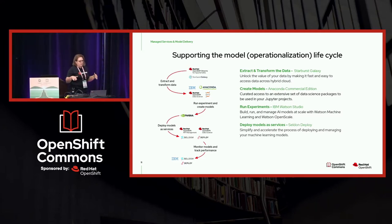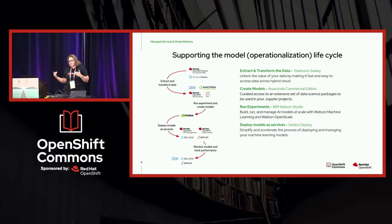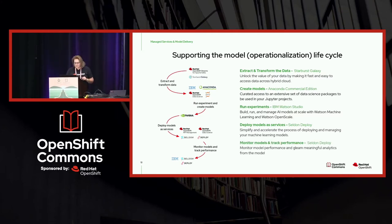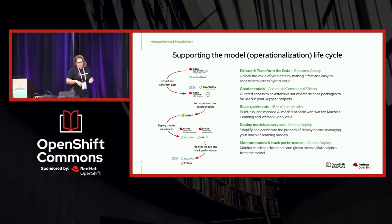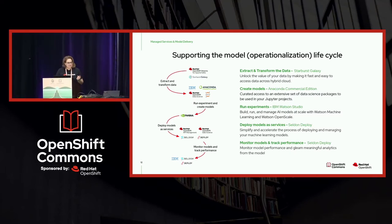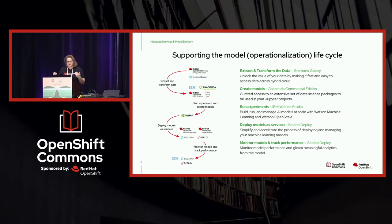Once you're done with your model and your experimentation, you want to deploy those models as actual services. You can use an ISV such as Seldon Deploy, which really helps you simplify and accelerate the process of deploying and managing your machine learning models. Finally, once your model is out there, you want to make sure it's performing optimally — you want to monitor model performance and glean meaningful analytics. This whole curvy path is the model operations lifecycle, and we need to see where managed services actually live within it.